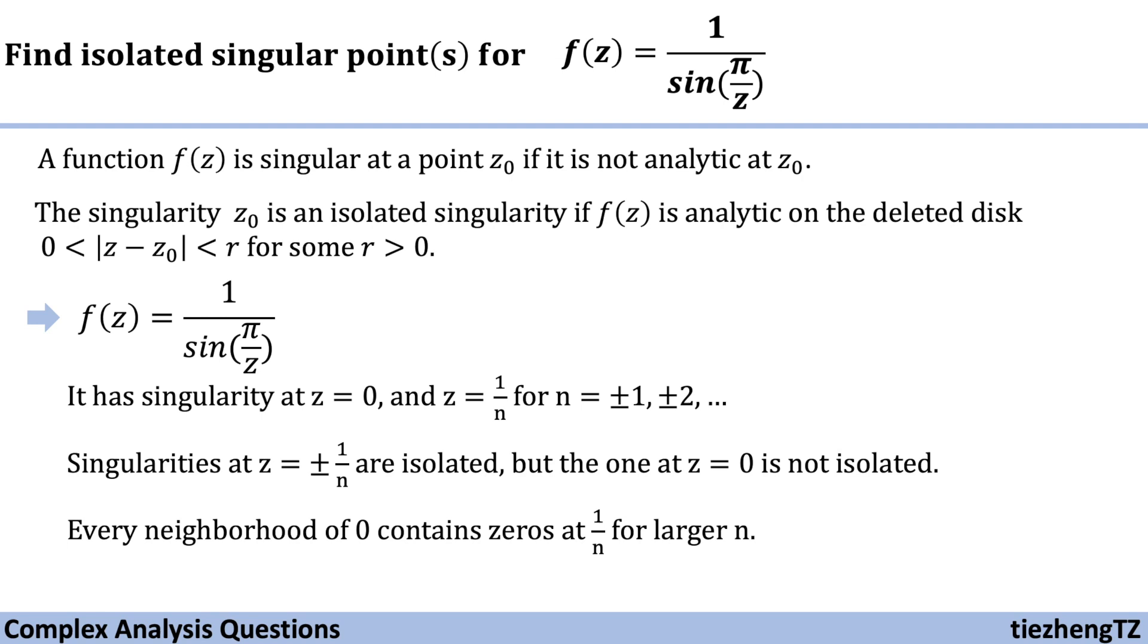To summarize, it should be easy for us to find the singular points for a given function. However, we need to be careful for each singular point. We need to see if f(z) is analytic on the corresponding deleted disk where |z - z₀| is between 0 and r.